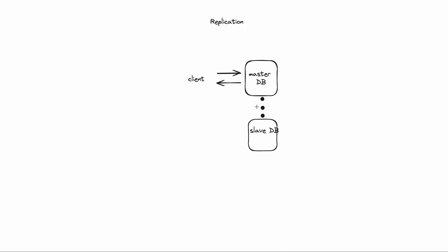This is how we set up replication in MySQL or any SQL database. We are using MySQL as an example, but it could be any distributed database. Whenever we write data, we can make multiple copies of it across multiple machines so that it is highly available. The client writes data; the master accepts the write, stores it locally, and returns the response. Asynchronously, the data is pushed to the slave machine, and instead of reading from the master, the client now reads from the slave.